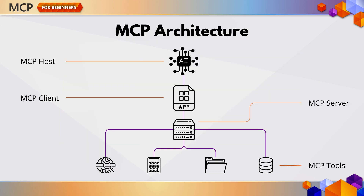At a high level, MCP follows a client-server model. You have an MCP host, which runs the AI model. An MCP client, often your app, which sends requests. And an MCP server, which provides tools, resources, and context your model might need. MCP servers manage things like tool registries, authentication, and formatting responses so the model can understand them. When the model needs help — maybe it wants to search the web or run some calculations — it talks to the server, which handles the rest.